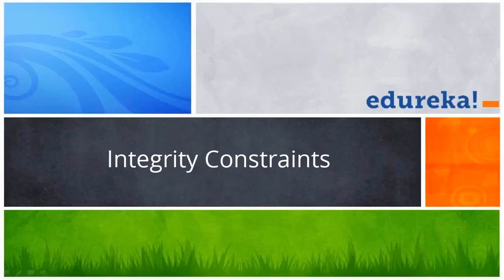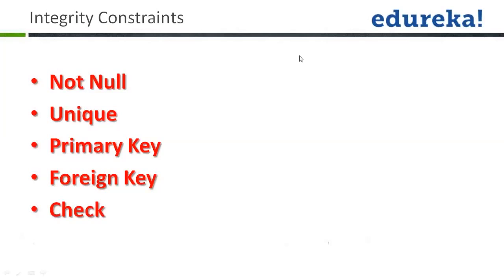Integrity constraints: not null — whenever you have to mention that a value cannot be null; unique — if the values that you are entering should be unique in that particular column, it should not be repeated. In that case you will be using unique.